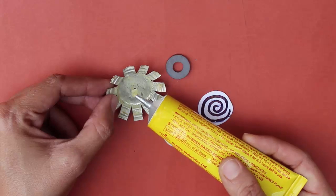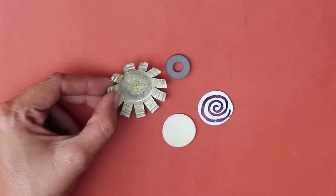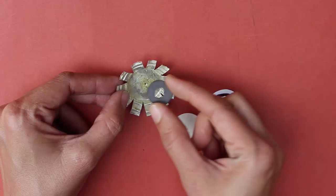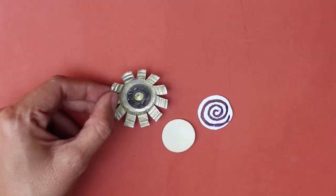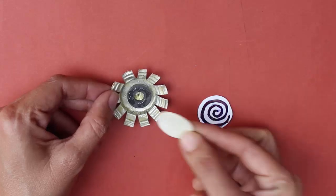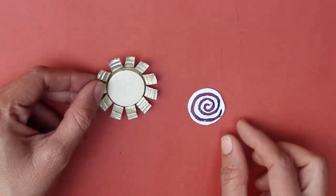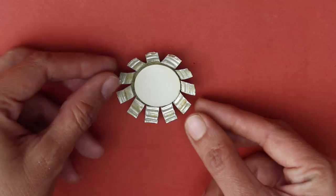Cut a metal bottle cap into a star shape, punch a small hole in the center. With rubber glue, stick the ring magnet in the center of the metal lid, then stick a white paper circle on top of this magnet.